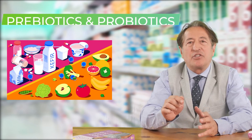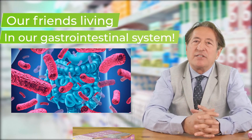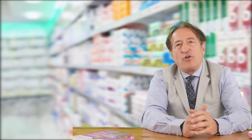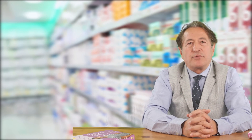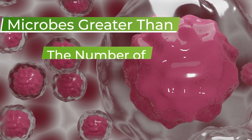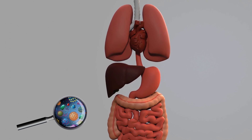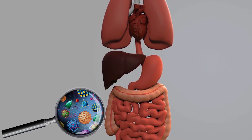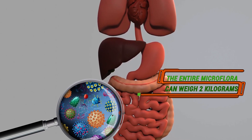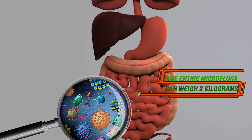That is, harmful bacterial growth in our intestines and the importance of prebiotics in the treatment. Our friends living in our gastrointestinal digestive system. Today, science knows that the total number of microbes in the human body is many times greater than the number of the body's own cells. The entire microflora of an average person can weigh 2 kilograms, and most of this microflora is in the gastrointestinal system, especially in the large intestine.